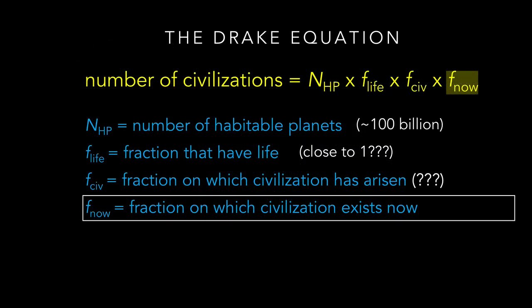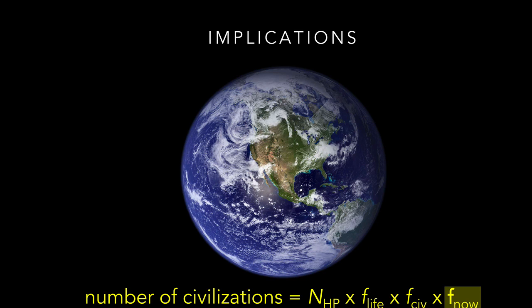This brings us to the last term in our Drake Equation. Even if civilizations are quite common, they might have arisen on particular worlds at almost any time over the past 10 billion or so years. In that case, the fraction of worlds on which a civilization exists now — so that communication with them would in principle be possible — depends on their survivability. If civilizations tend to destroy themselves shortly after developing the capability for interstellar communication, then F-now would be small. But if they survive for the long term, then it might be fairly large. It's worth noting that this has extraordinary implications for our own civilization. All civilizations must go through time periods like we are in today, in which we have the potential both to travel into space and to destroy ourselves. Therefore, proof that even a single other civilization has managed to survive would give us hope that we ourselves may successfully navigate this difficult period of human history.